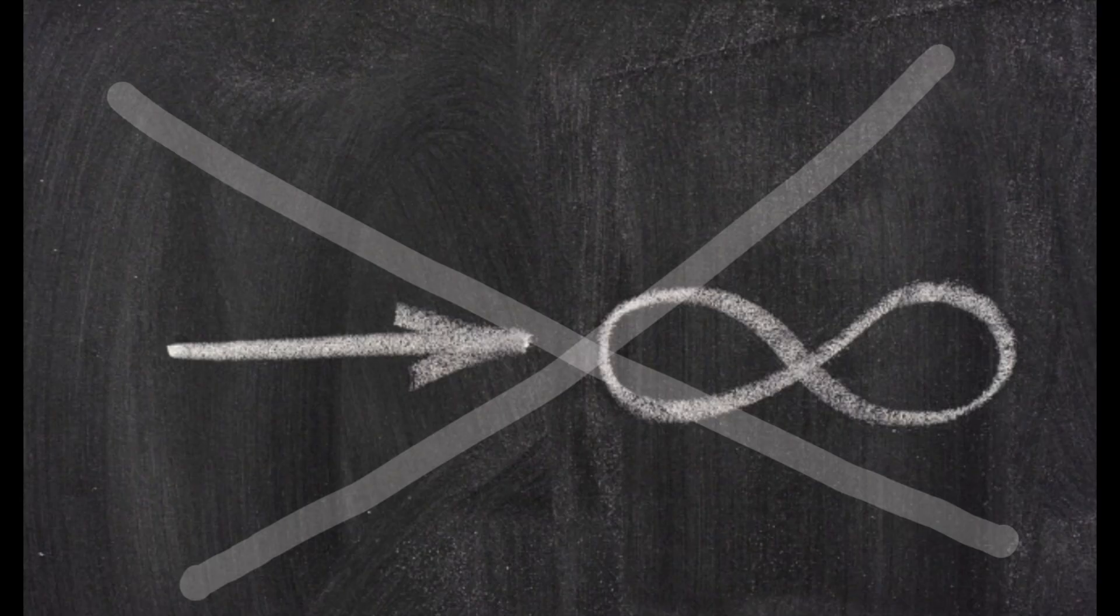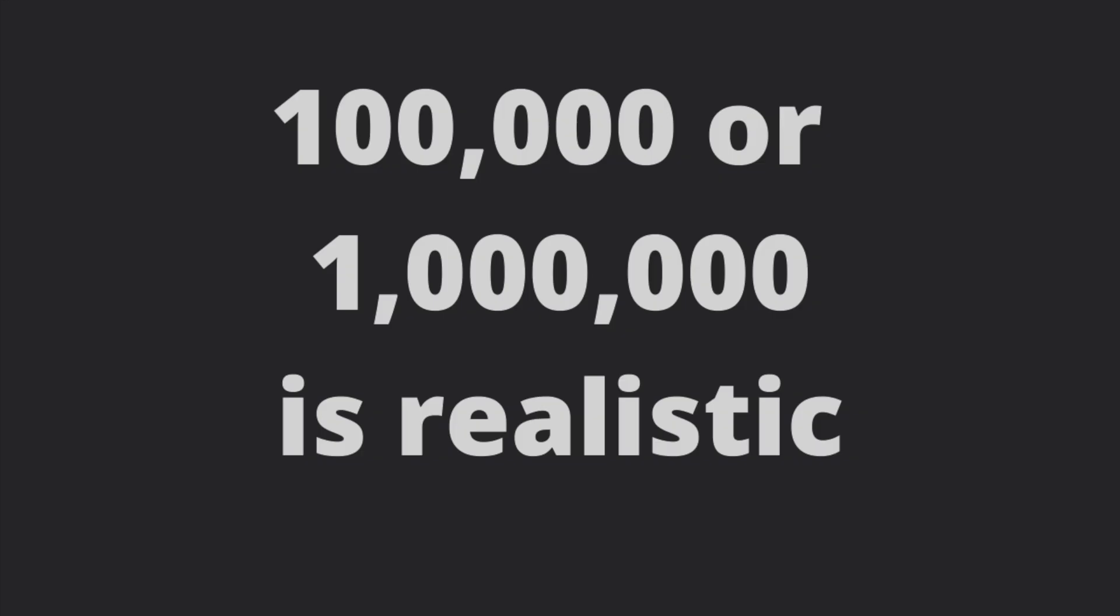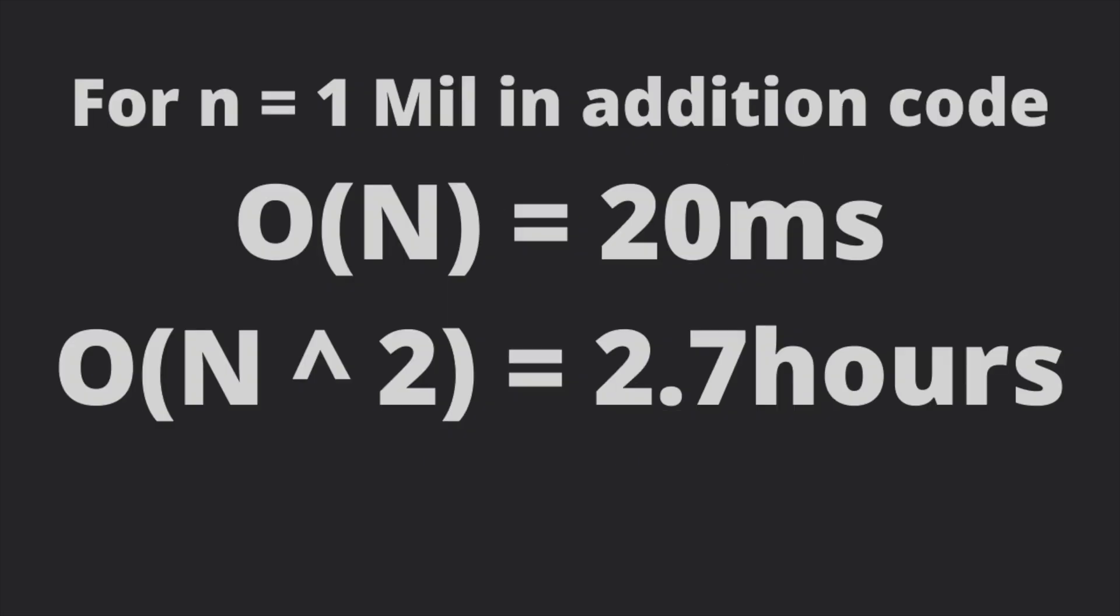Now you might be thinking, I never have infinite data, so why is it useful? And the reason is, we often have millions of data points. And when you run an n square and an n algorithm on million data points, the time difference between them is massive. The time complexity starts to matter. A lot.